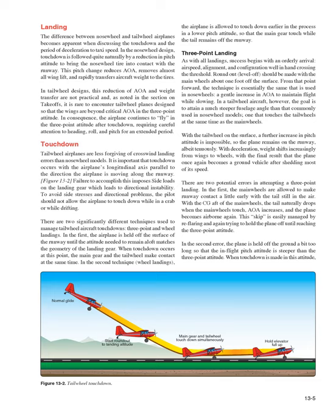The difference between nosewheel and tailwheel airplanes becomes most apparent at touchdown and during deceleration to taxi speed. In nosewheel designs, touchdown is followed by a reduction in pitch attitude, which reduces AOA, removes wing lift, and rapidly transfers weight to the tires. In tailwheel designs, this reduction in AOA is not practical; it is rare for a tailwheel airplane's wings to be beyond critical AOA in the three-point attitude. Consequently, the airplane continues to fly after touchdown, requiring careful attention to heading, roll, and pitch for an extended period.